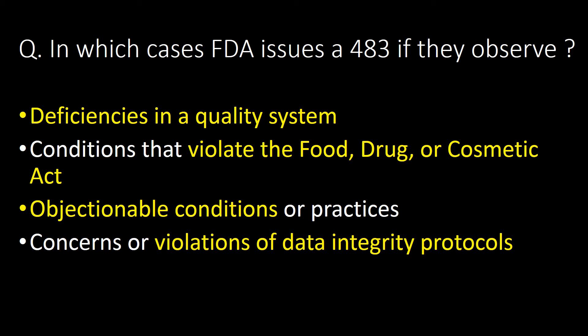In which cases does the FDA issue a 483 if they observe? The following are four cases for which the FDA very commonly issues a 483: first, deficiencies in a quality system; second, conditions that violate the Food, Drug, or Cosmetics Act; third, objectionable conditions or practices; and fourth, concerns or violations of data integrity protocols.